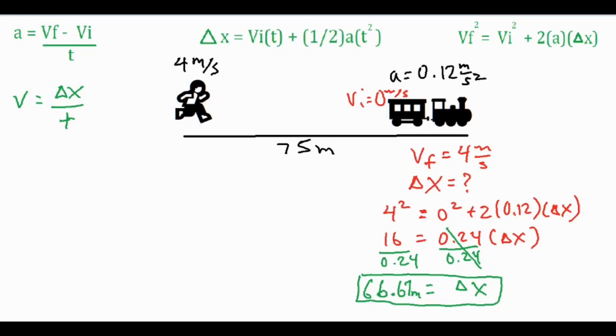All right, so we got a delta x value of 66.67 meters. I plugged into that third formula. All I really had to do is combine these two to have a coefficient in front of the delta x, finish scoring that 4, divide both sides by 0.24, and then I found my delta x.